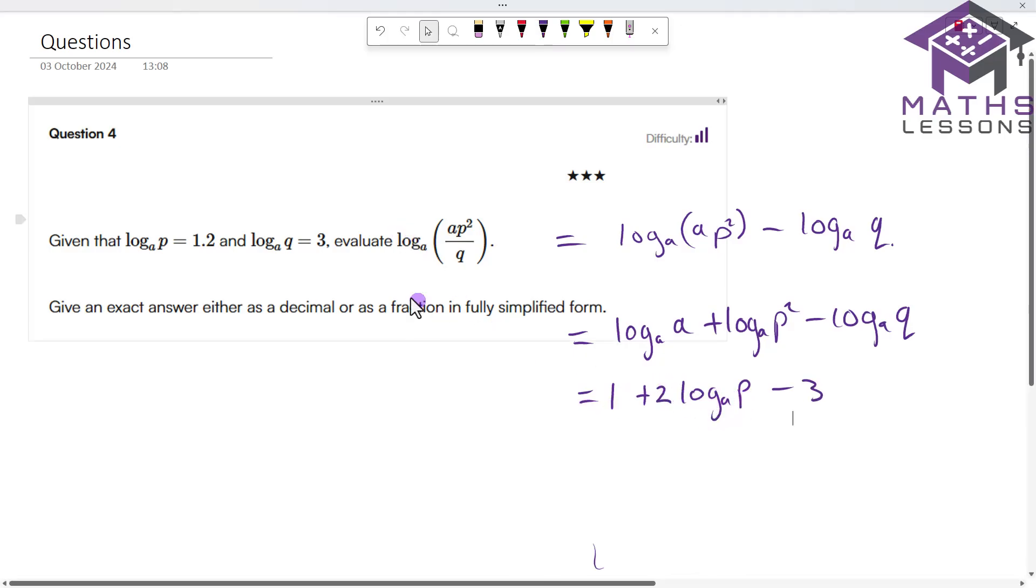And I know log a of p is equal to one point two. So it's equal to one plus two times one point two minus three. So that's two point four, three point four. So the answer will be naught point four.